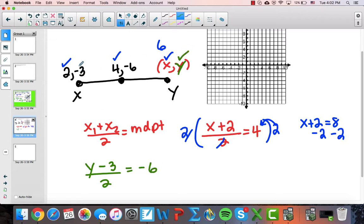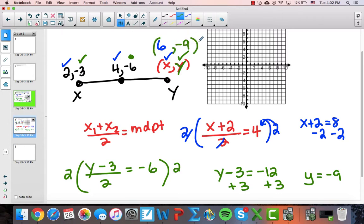So I did the y plus the y, so the average of the endpoints equals the midpoint. I clear the fractions by multiplying both sides by 2, and I get y minus 3 equals -12. I'm going to plus 3 and plus 3, so y equals -9. So I'm going to get an endpoint of (6, -9).